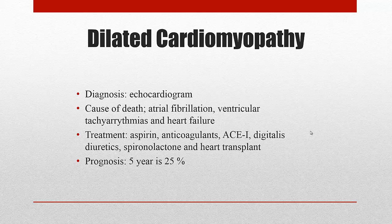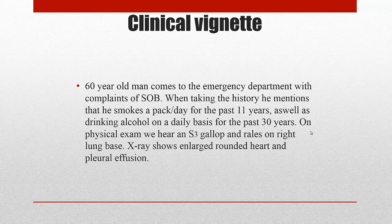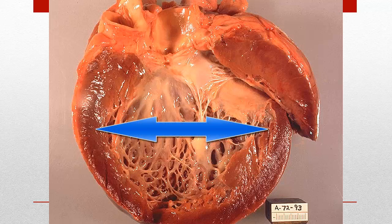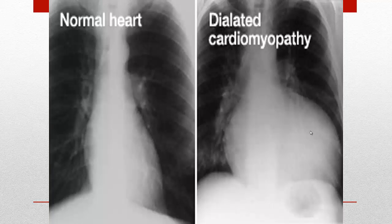Here you see a clinical vignette. What you need to focus on is that the person is drinking alcohol on a daily basis for a very long period of time. You hear the S3 gallop, signs and rales on the right lung base, and the X-ray shows an enlarged, rounded heart and pleural effusion — the pleural effusion being due to the progressive heart failure. Here is a picture of the dilated cardiomyopathy, and to the right you see how it has a ball-shaped appearance on the X-ray.